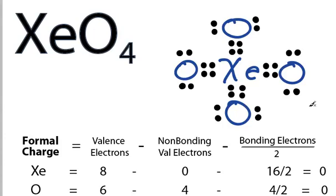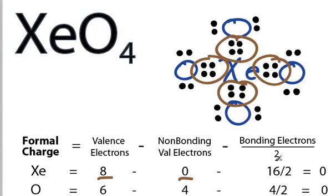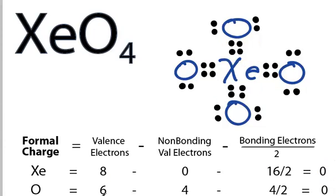Let's check our formal charges, see if this is the correct or the best Lewis structure for XeO4. Xenon is 8 valence electrons. All of these valence electrons are involved in bonds, so there is 0 non-bonding. And if you count these up, you will find that there are 16 bonding electrons, which we'll divide by 2. 16 divided by 2. 8 minus 0 minus 8 gives you 0. For the oxygen on the periodic table, 6 valence electrons. We have 4 that are non-bonding, and then we have 4 that are bonding that we divide by 2. 6 minus 4 minus 2 is 0.